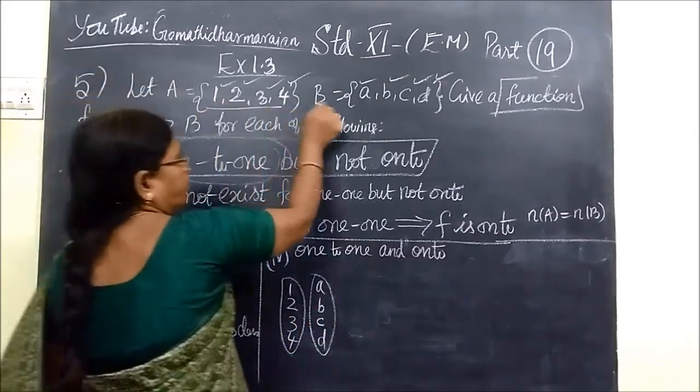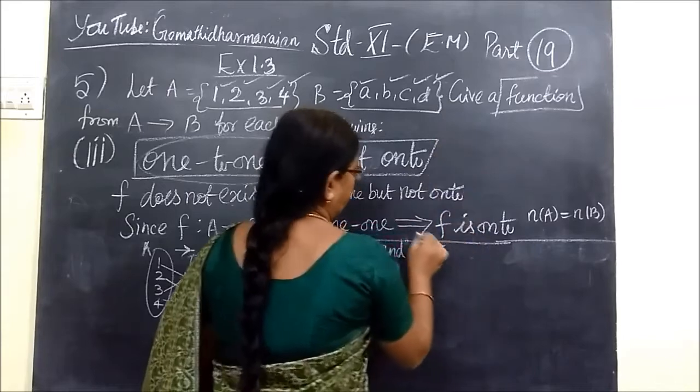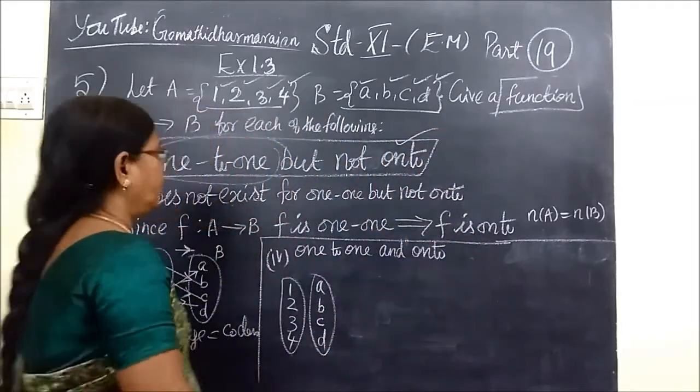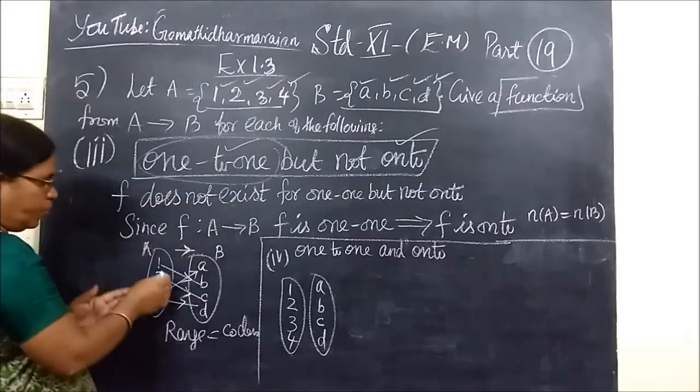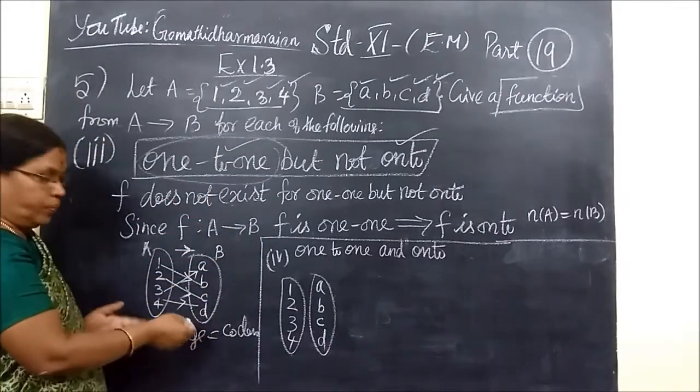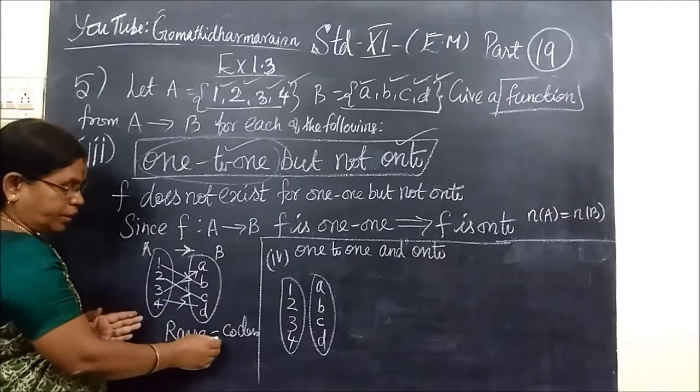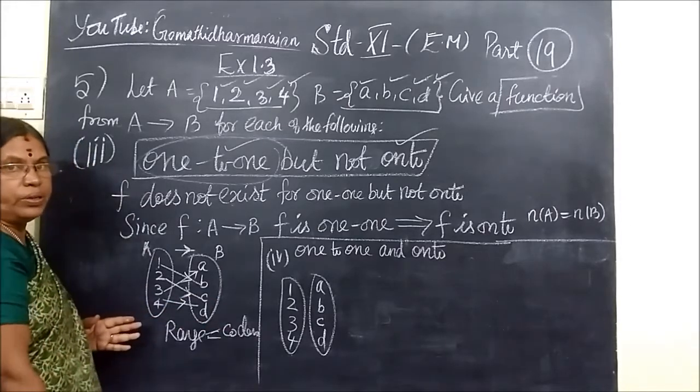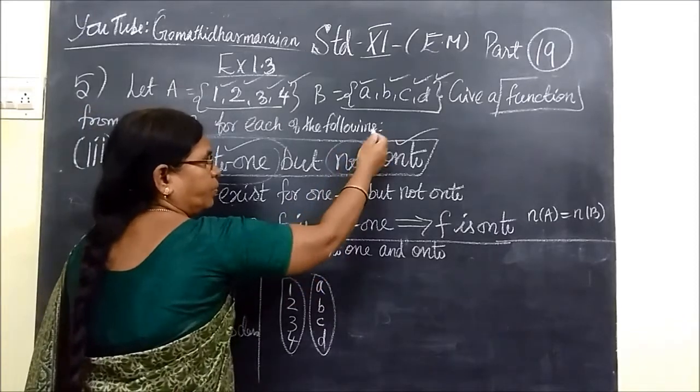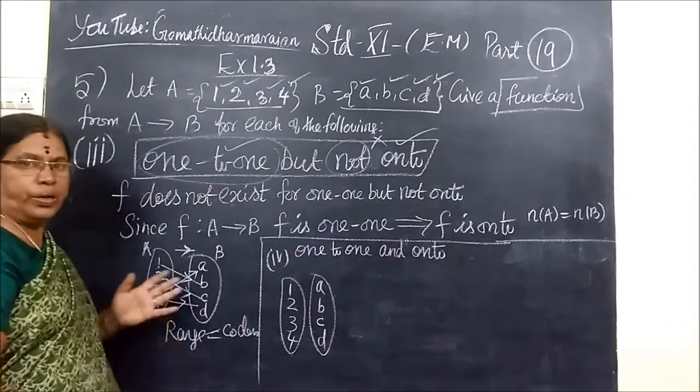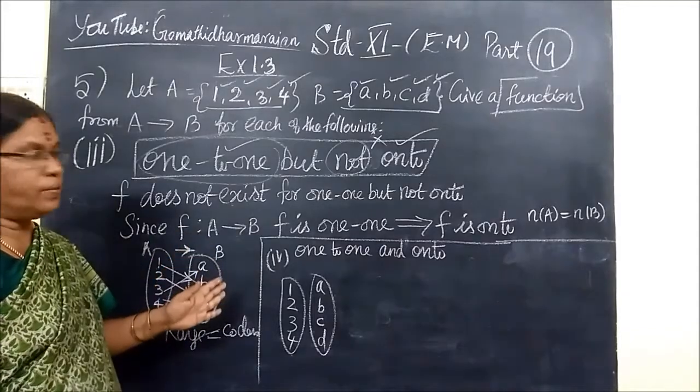So n of A equal to n of B, then it is onto function. That means 1-1 already we got. So range equal to codomain, then range equal to codomain. So we can't consider such functions.